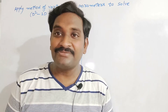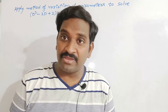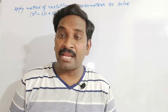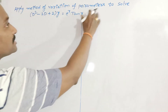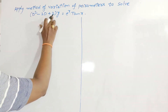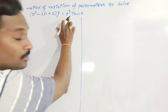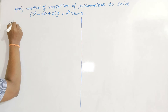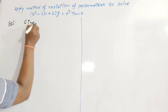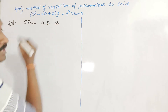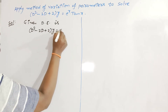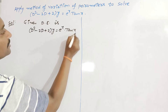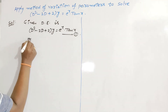Welcome back to our channel. In this video I would like to explain another example on the method of variation of parameters, which is used to solve higher-order linear differential equations with constant coefficients. The given problem is: apply the method of variation of parameters to solve (D² - 2D + 2)y = eˣ tan x.